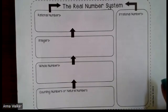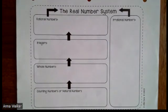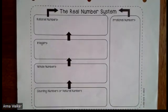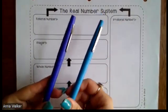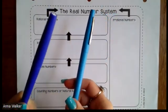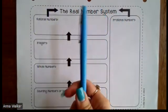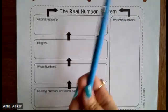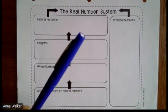Today we're going to talk about the real number system, meaning we are going to be talking about the kinds of numbers we are going to be using throughout the entire school year. I am going to use two different colors while we take notes — dark blue and light blue. We're going to use one color to denote whether numbers are positive or negative, and the other color to mainly talk about the definitions.